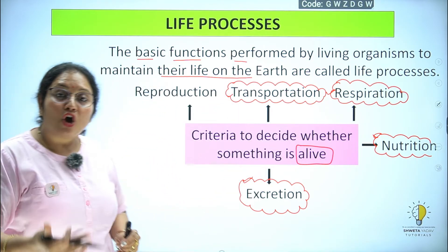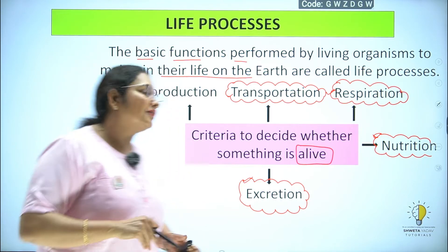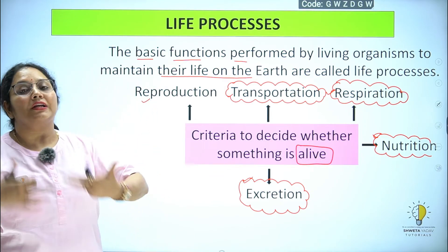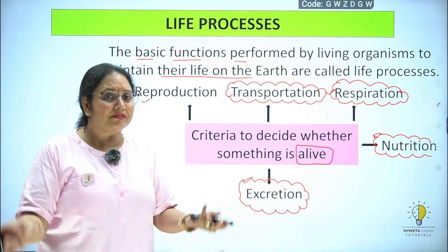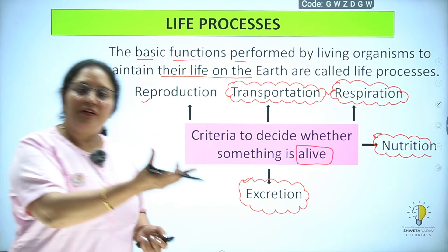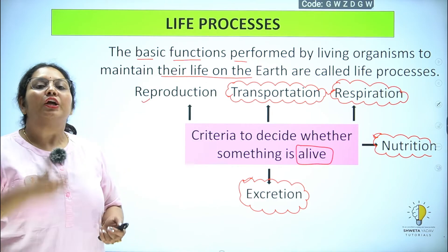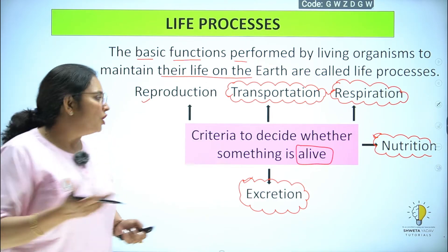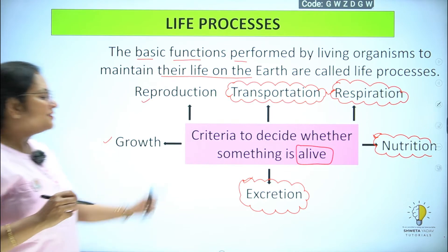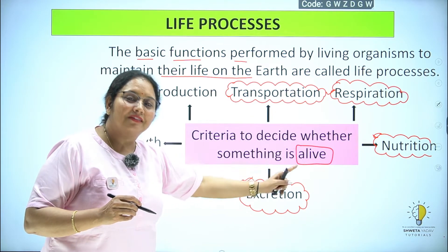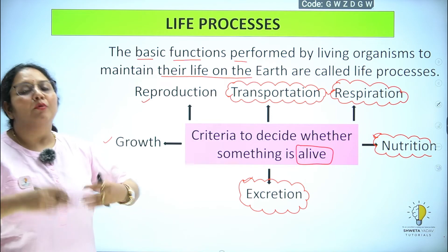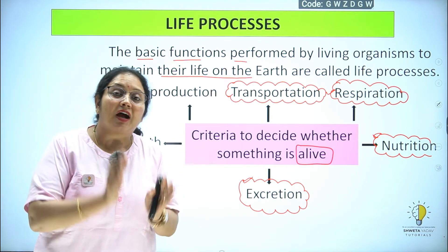पर इसके अलावा भी एक living organism को living और भी criteria से कह सकते हैं। उनमें आता है reproduction — अपने जैसा नया organism बनाना is reproduction। अगर एक unicelled organism भी अपने जैसा नया organism बना रहा है, तो वो reproduce कर रहा है। Human beings में बच्चे पैदा करना is reproduction। Growth होना भी sign है किसी organism के जिन्दा होने का — जैसे हम बचपन से बड़े होते हैं, body में बहुत सारी changes आती हैं, that is growth।